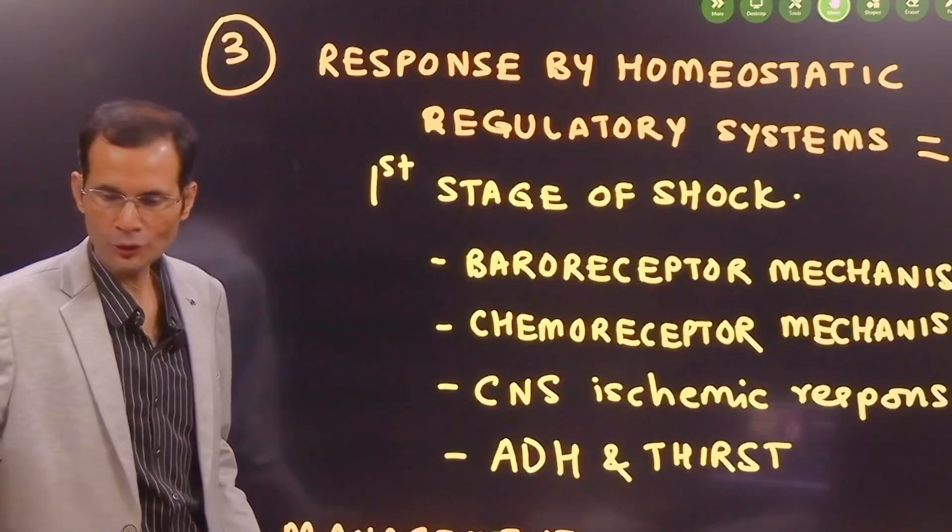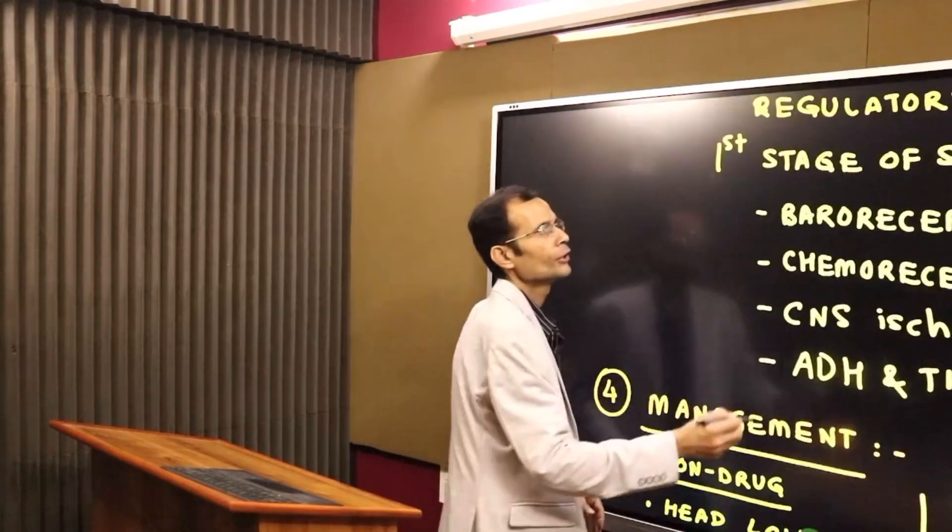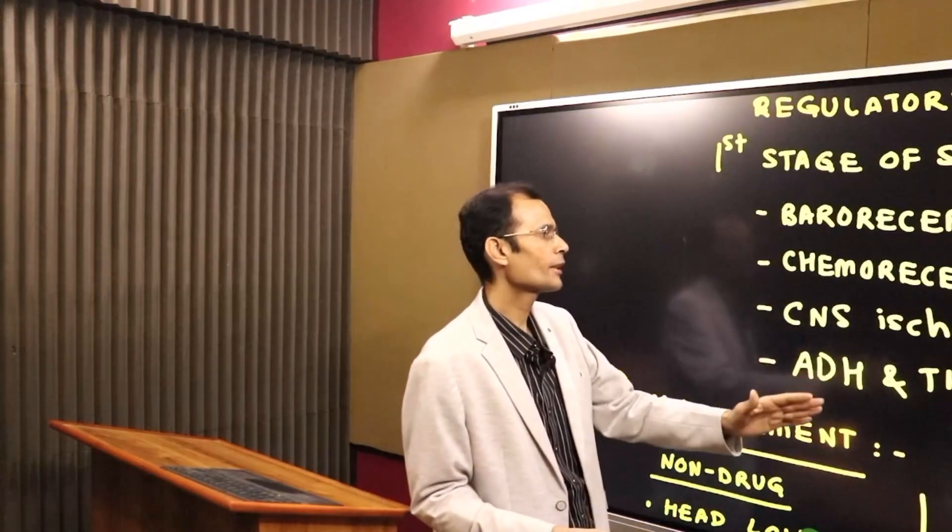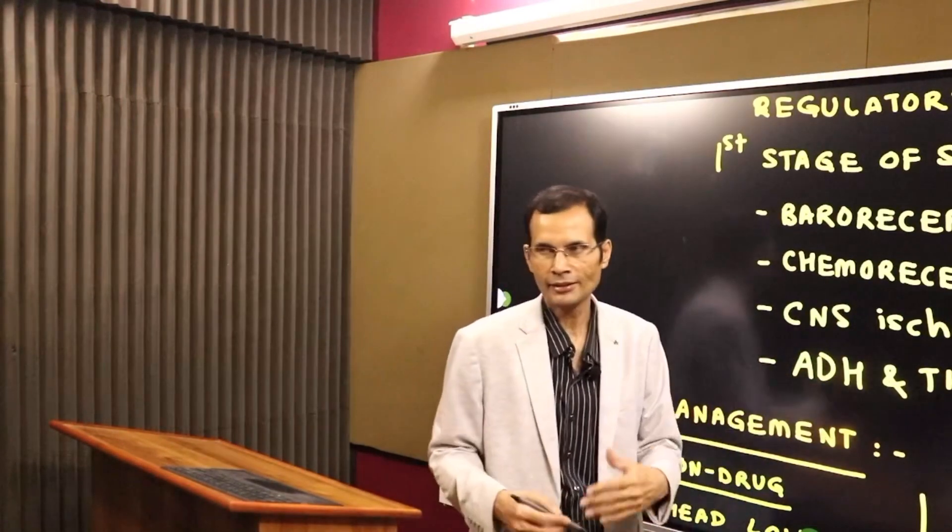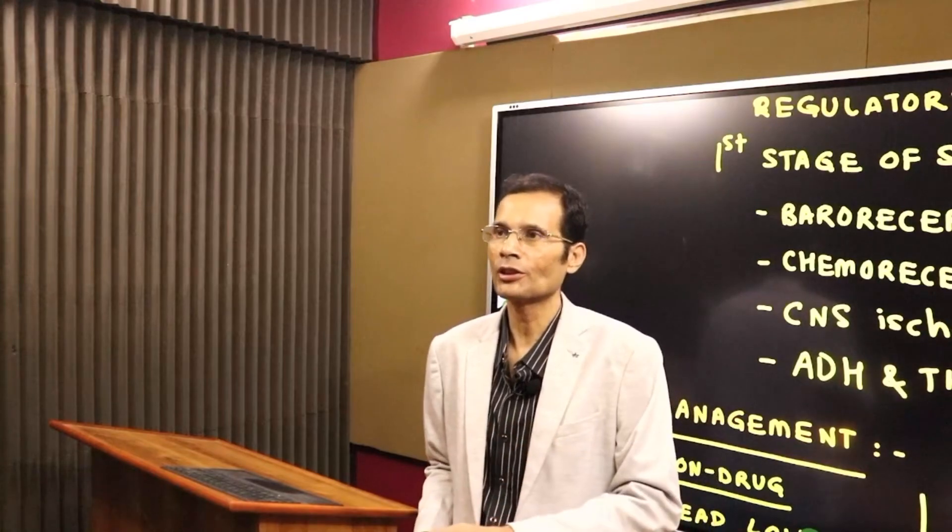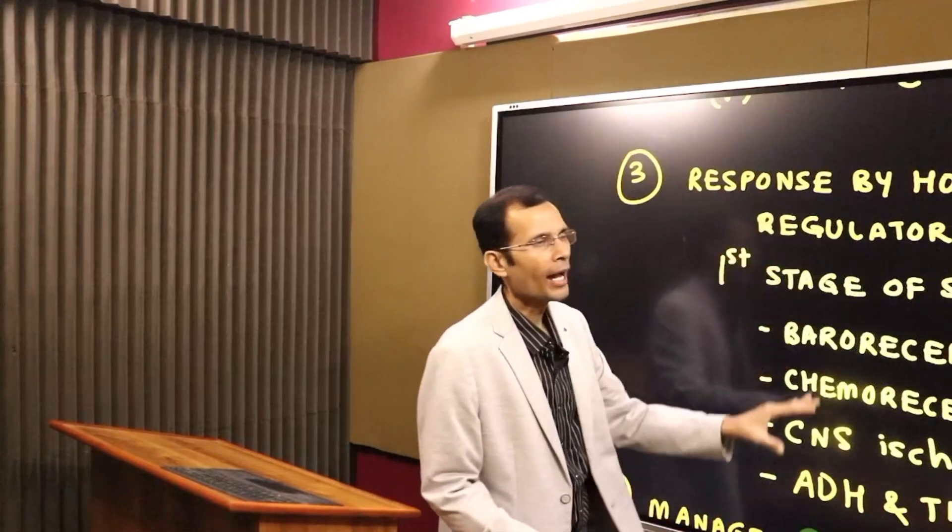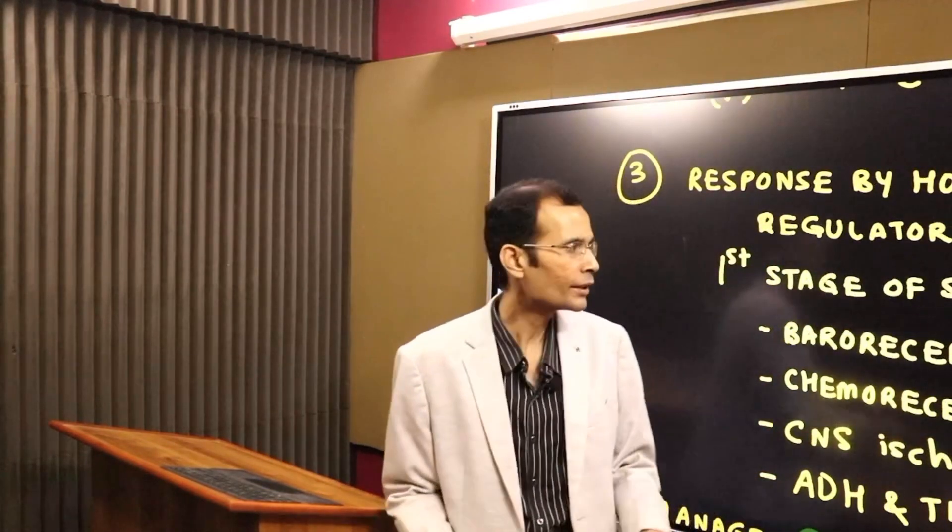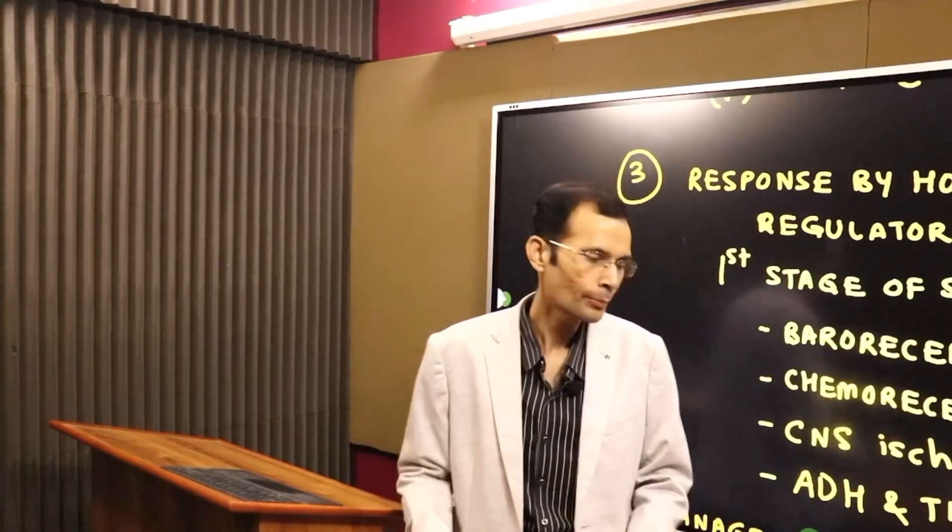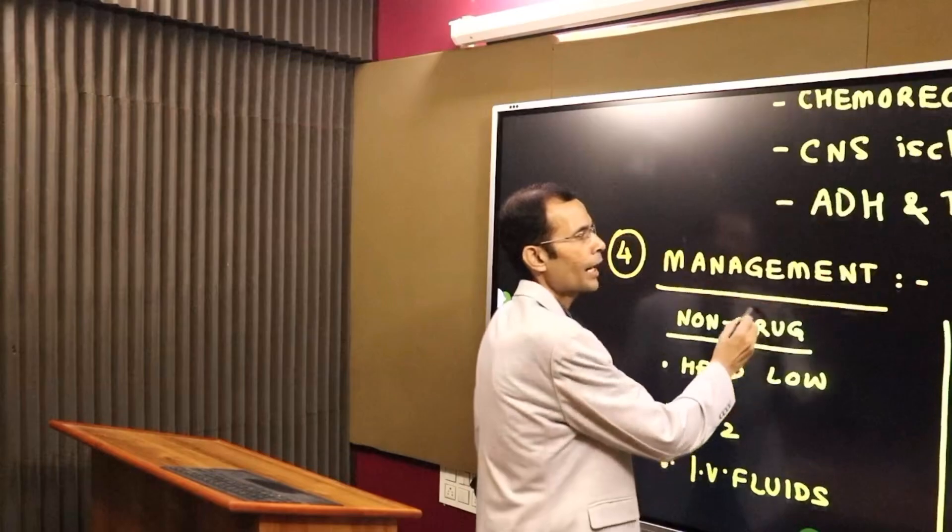First stage of circulatory shock. The patient is in the hospital, injection is administered, patient is going into shock - it's obviously the first stage of shock. Before any treatment could be started, his body's own homeostatic regulatory mechanisms will kick in. First stage of shock, the compensated stage as it is known, all the short-term BP regulating mechanisms will come into play: baroreceptor mechanism, chemoreceptor mechanism, CNS ischemic response, ADH and thirst, etc. You have to judge how many marks have been allocated - if it's a 10 marks question, this part has maximum weightage, five or six marks, and therefore in brief you will have to describe these mechanisms.